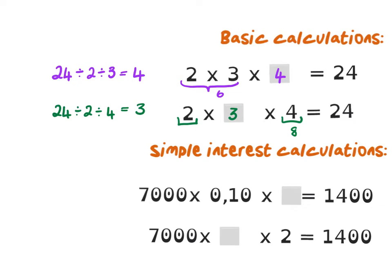The same applies to simple interest calculations backwards. If I know that 7,000 times 10% — which you can write as 0.10 or 10 over 100 — gives an answer of 1,400, then I can figure out what the missing value is. So 10% of 7,000 is 700, and to get to 1,400 I multiply by 2, so my investment period was 2 years. It's just like your grade 7 calculations — a bit more complicated because it's in a story sum now, but the same principles apply.